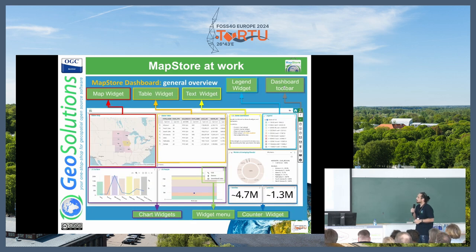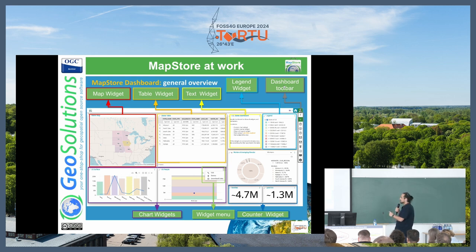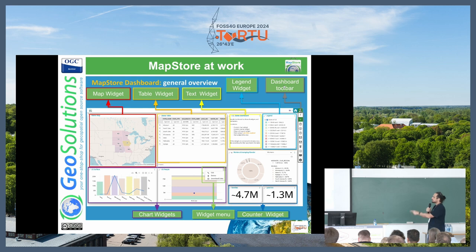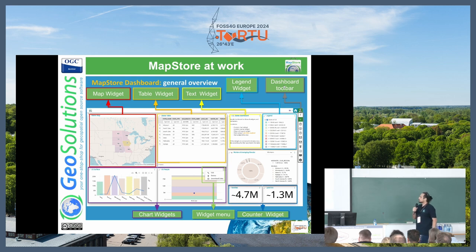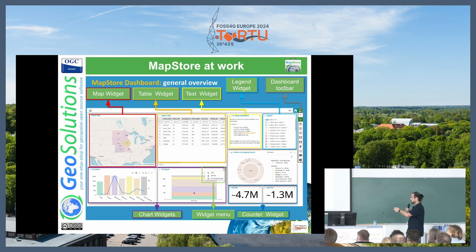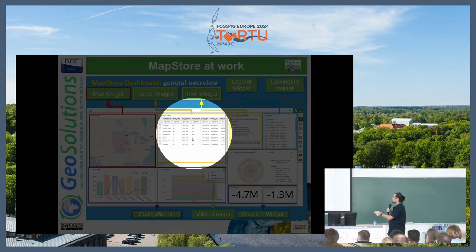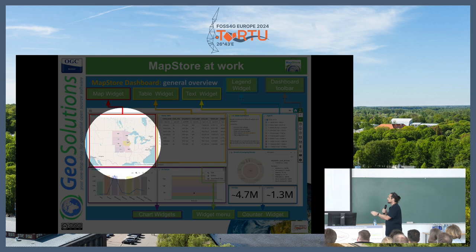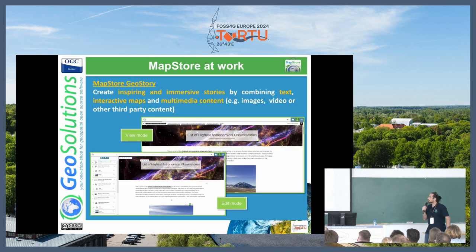The MapViewer also includes printing, catalog, and many other tools. The widgets can be included in a dashboard, another type of content that can include maps, legends, tables, and charts. They are all connected — if you zoom on the map the charts update, and if you filter the table the charts and map update accordingly to keep everything consistent.